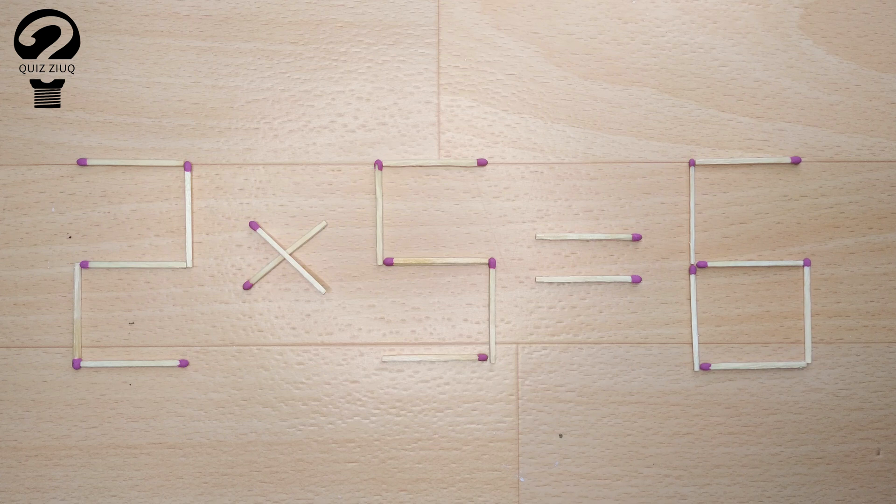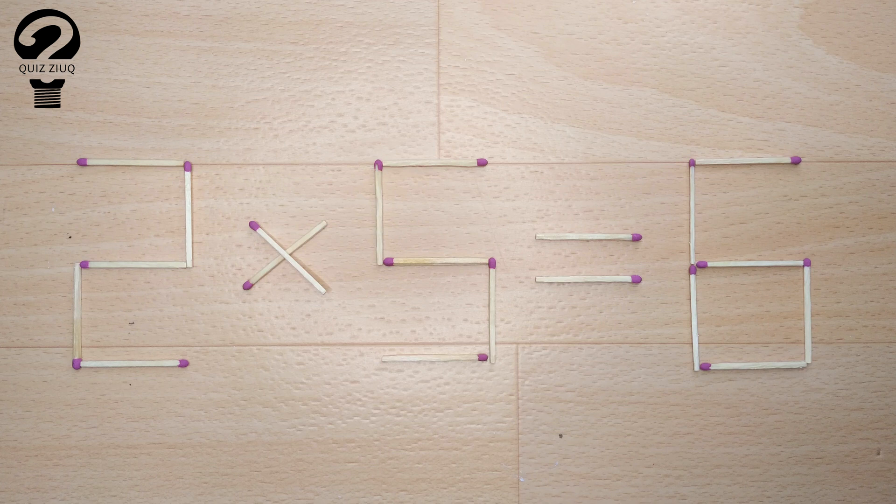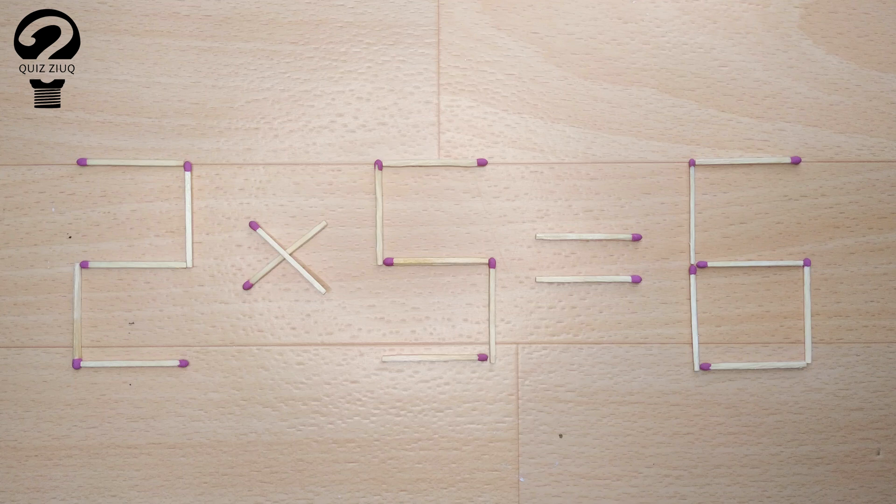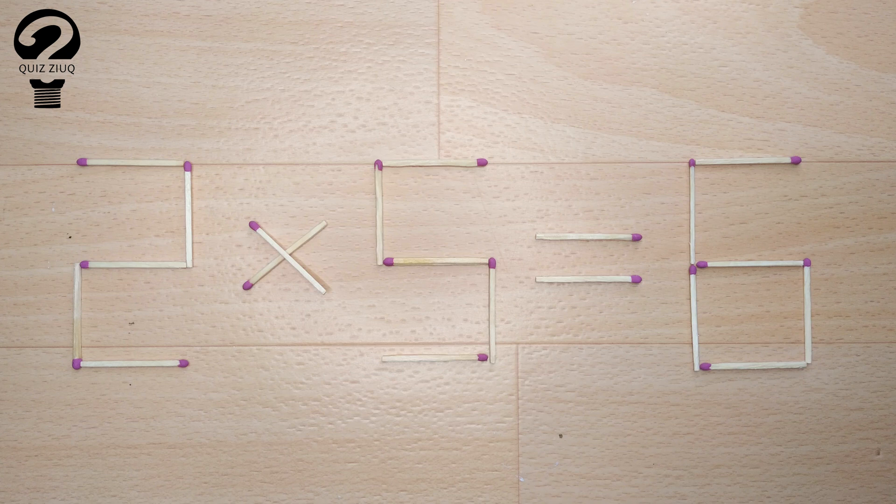Here's the next puzzle. We have this equation, 2 times 5 equals 6. Our equation is incorrect, and we need to move two matches to make our equation correct.